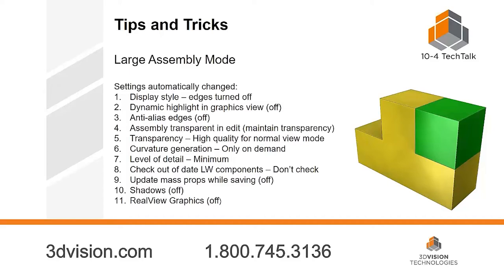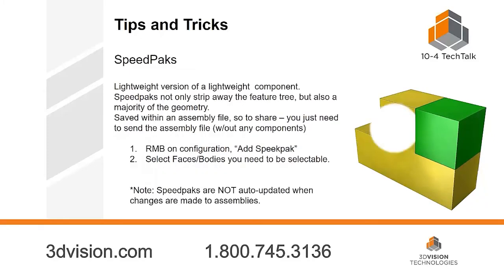Large assembly mode can turn on or off based on your system preferences. You can set it so that whenever you have an assembly over 250 components, large assembly mode turns on automatically. It then makes certain option changes to improve performance of that specific assembly. Here's an example of some of those options that are automatically turned on or off just by having large assembly mode enabled.